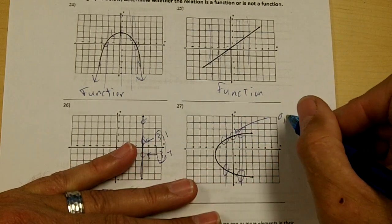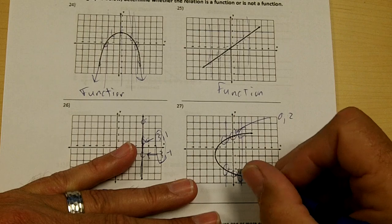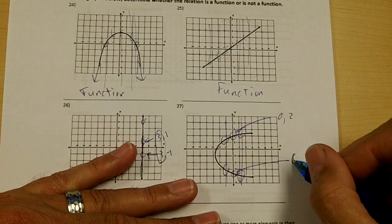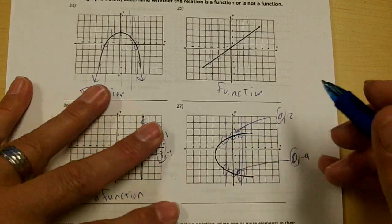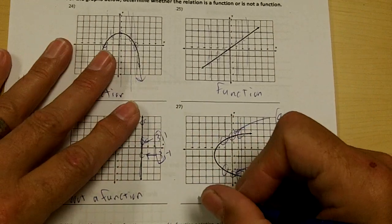this would be 0, 2, and this would be 0, negative 4. The 0 repeats. This has a whole bunch of numbers that repeat, so this graph would not be a function.